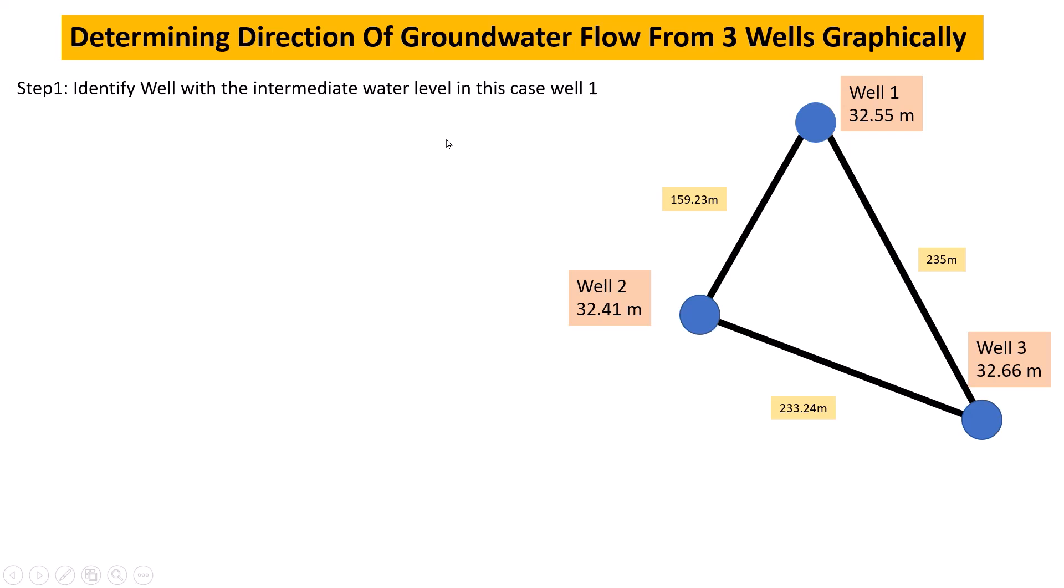We need to determine the well with the intermediate water table. Well 1 has the intermediate water table because 32.55 is less than 32.66 and higher than 32.41.